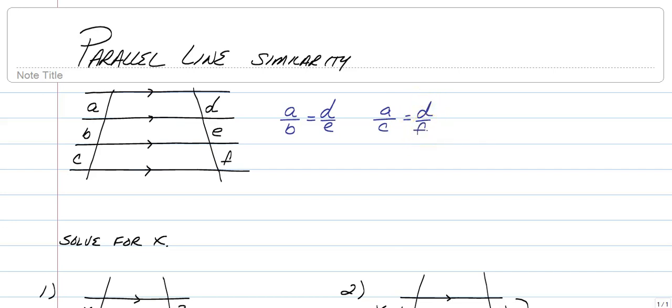You can even do things like the bottom C over the top two put together, A plus B, is equal to the bottom F over the top two, D plus E. There are so many different things you can do, we're not going to list them all. You can even do things like A over A plus B plus C. These are just a couple examples.